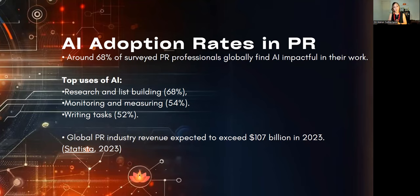I'm currently researching for a book that will be published by Palgrave-McMillan called AI in Strategic Communication. So far I've interviewed 36 people from around the globe — some have been PR and strategic communication practitioners, others have been scholars, and a third have been people who work or have founded generative AI tools that strategic communicators would use. I will refer to some preliminary findings, as I'm still making sense of all the data, and I'll also weave in some of the things that I've learned.